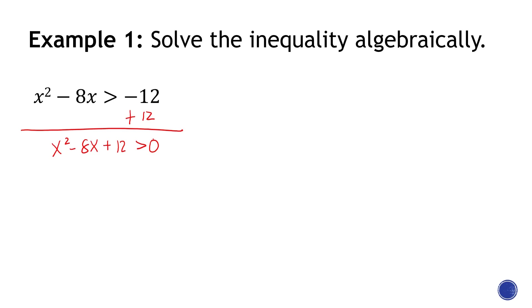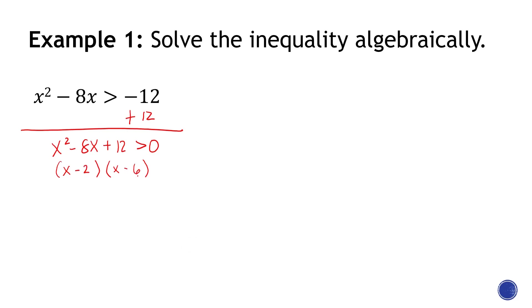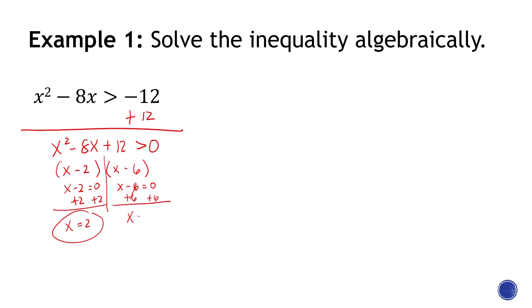Step number two — solve for x. I think this can be factorized. Think about two numbers that when multiplied give positive 12, and when added give negative 8. That's negative 2 and negative 6: negative 2 times negative 6 is positive 12, and negative 2 plus negative 6 is negative 8. So x minus 2 equals 0 gives x equals positive 2, and x minus 6 equals 0 gives x equals positive 6.